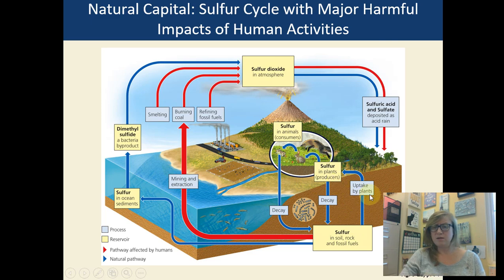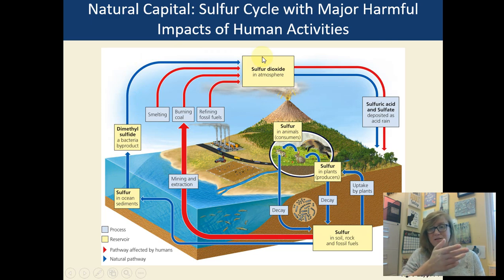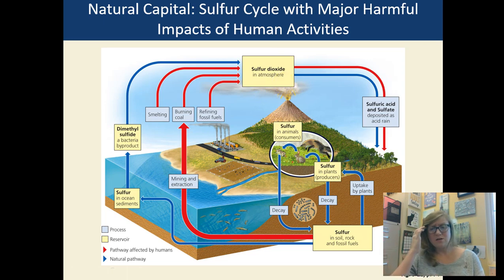Sulfur is in rocks as one of its reservoirs. It gets taken up by plants and into the food chain, and when things decay and die, the sulfur gets broken back down. But we extract a huge amount of sulfur when we mine for coal and fossil fuels, burning it and adding more sulfur dioxide to the air. One natural input is a bacterial byproduct — dimethyl sulfide. But we're altering this cycle in a really big way, adding a lot more to our atmosphere and causing additional acid rain.